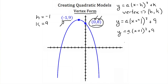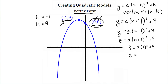So if I do that, my y is 8 and my x is 0. So we'll have 8 is equal to a times 0 plus 1 squared plus 9. Now 0 plus 1 is just 1, so we'll have 8 is equal to a times 1 squared plus 9. 1 squared is 1, so this will be 8 is equal to a plus 9. Subtract 9 from both sides, and you'll get a is equal to negative 1.